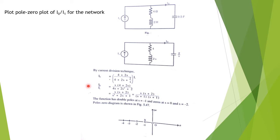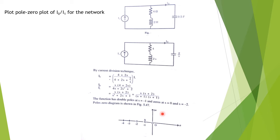For the function I0/I1, the pole-zero plot shows a zero at s = 0 (circle at origin), another zero at s = −2 (circle at −2), and two poles at the same location s = −1 (double cross at −1), indicating multiple poles at that location. This is a simple example: find the network function I0/I1 in the s-domain, factorize numerator and denominator, then show poles and zeros on the pole-zero plot. The scale factor h equals 1.